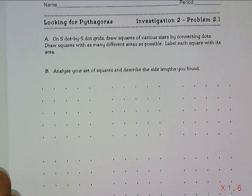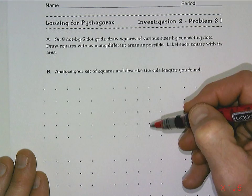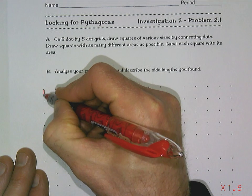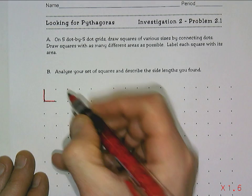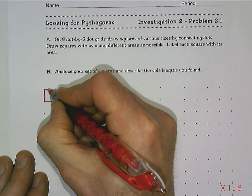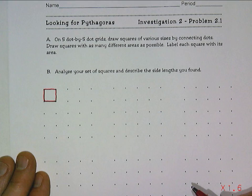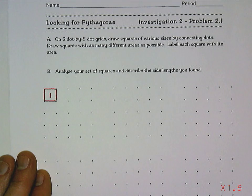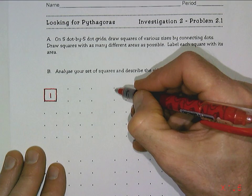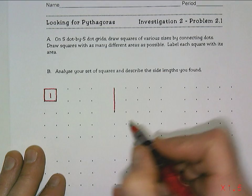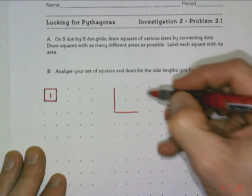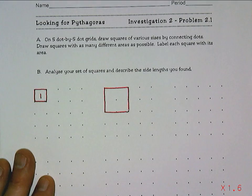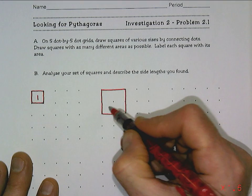We're going to limit ourselves to a maximum of 5-dot by 5-dot grid. The simplest square we can draw is just a square with one square unit — that's an area of one square unit. Connecting dots of various sizes to make squares, our definition of a square is all four sides are the same length. The next one has an area of one, two, three, four square units.